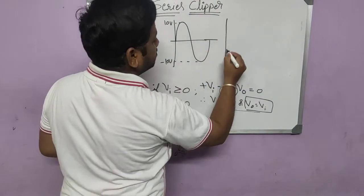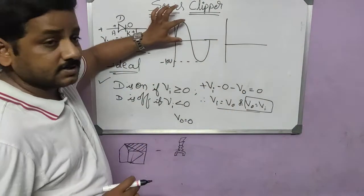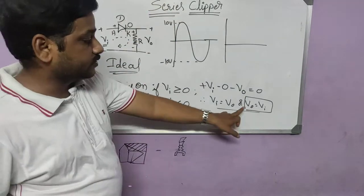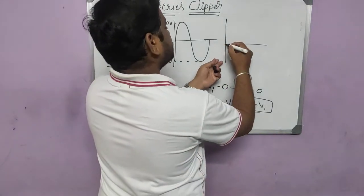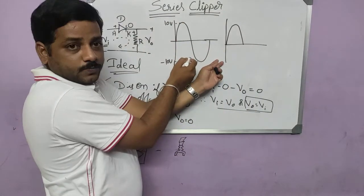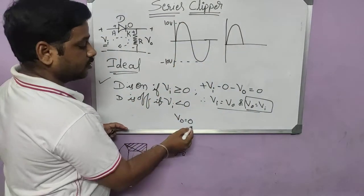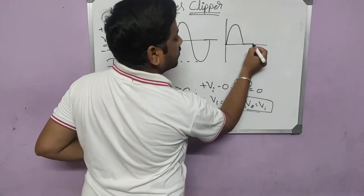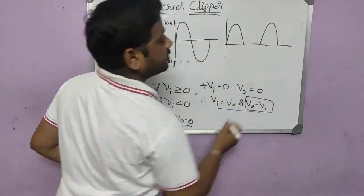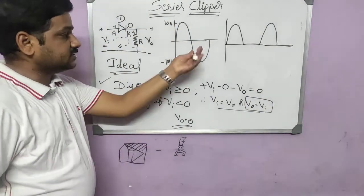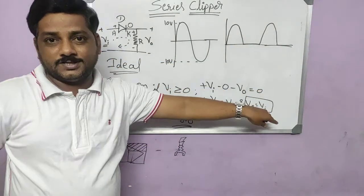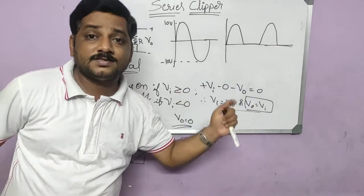Now let us plot the output. For the positive half cycle, input is greater than zero, so the diode is ON and the output is similar to the input — it just follows the input. When the input is less than zero, the output will be zero and remains flat. Then it repeats for the next pulse. So the output clips the complete negative portion — we call this a negative series clipper.